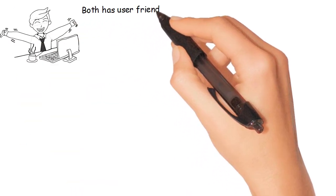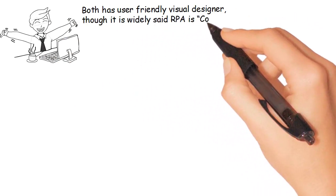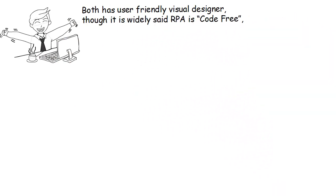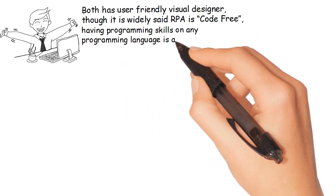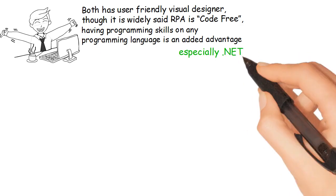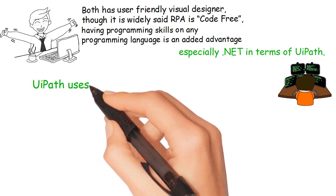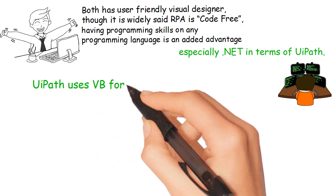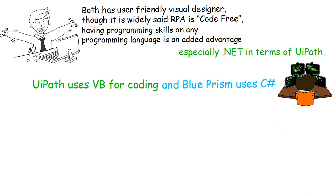Developer Experience: Both have user-friendly visual designers. Though it is widely said RPA is code-free, having programming skills in any programming language is an added advantage — especially .NET in terms of UiPath. UiPath uses VB for coding, and Blue Prism uses C#.